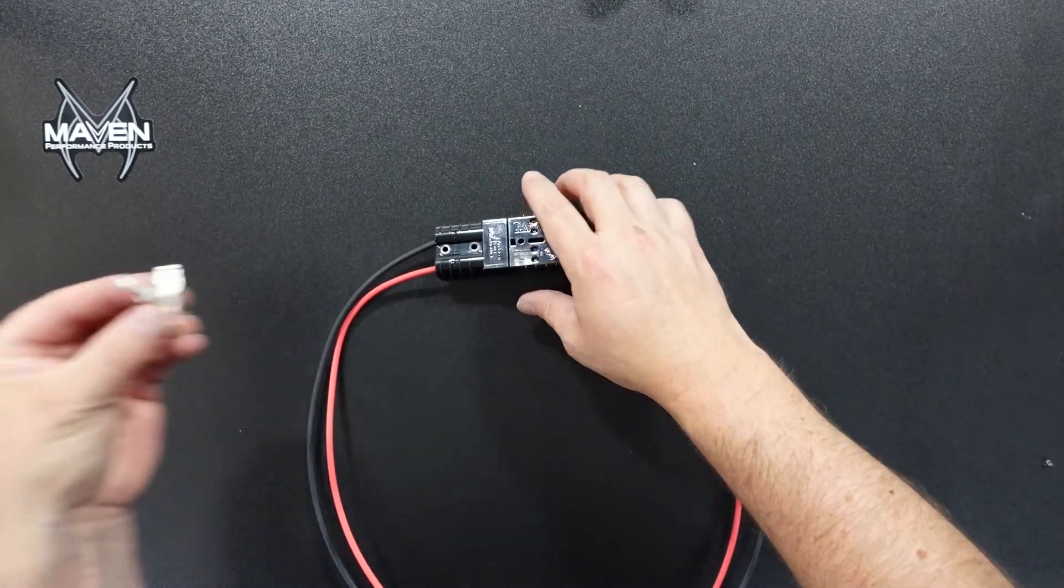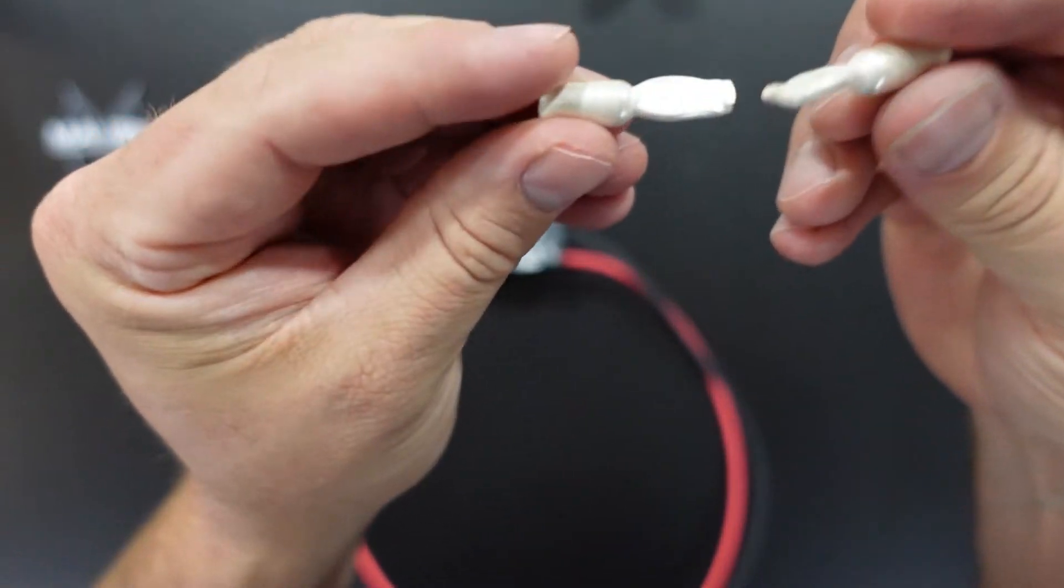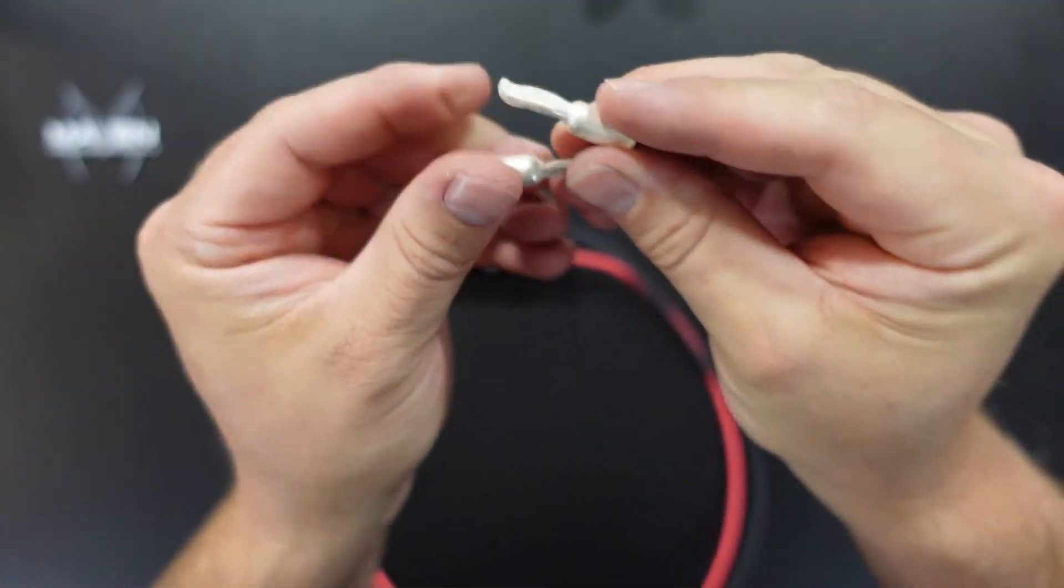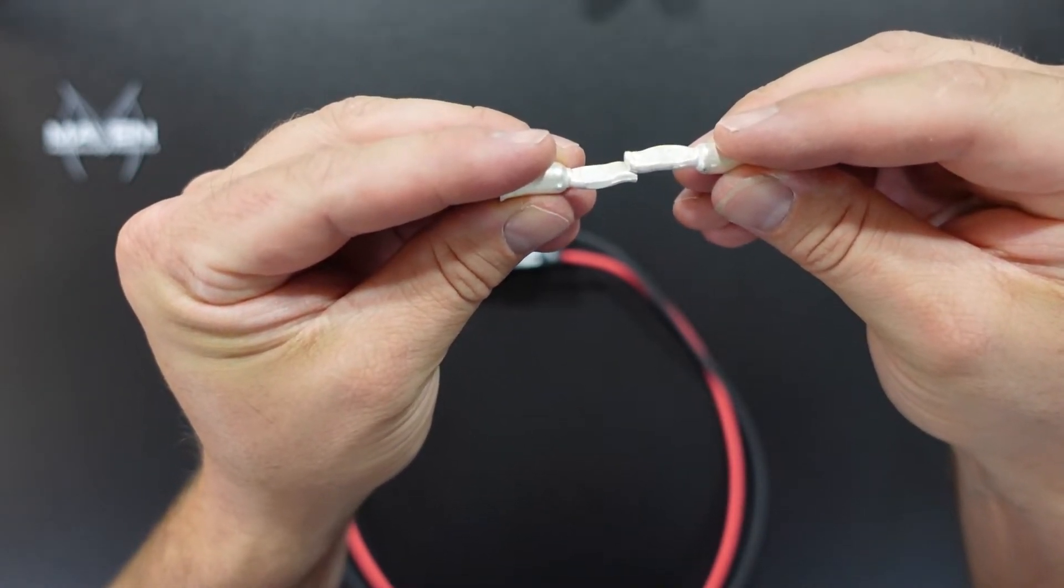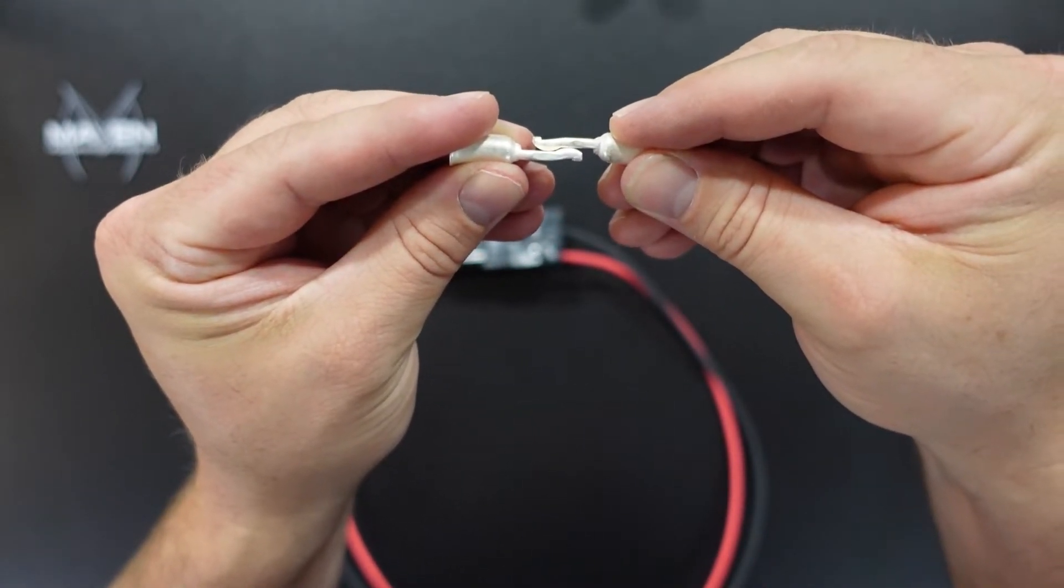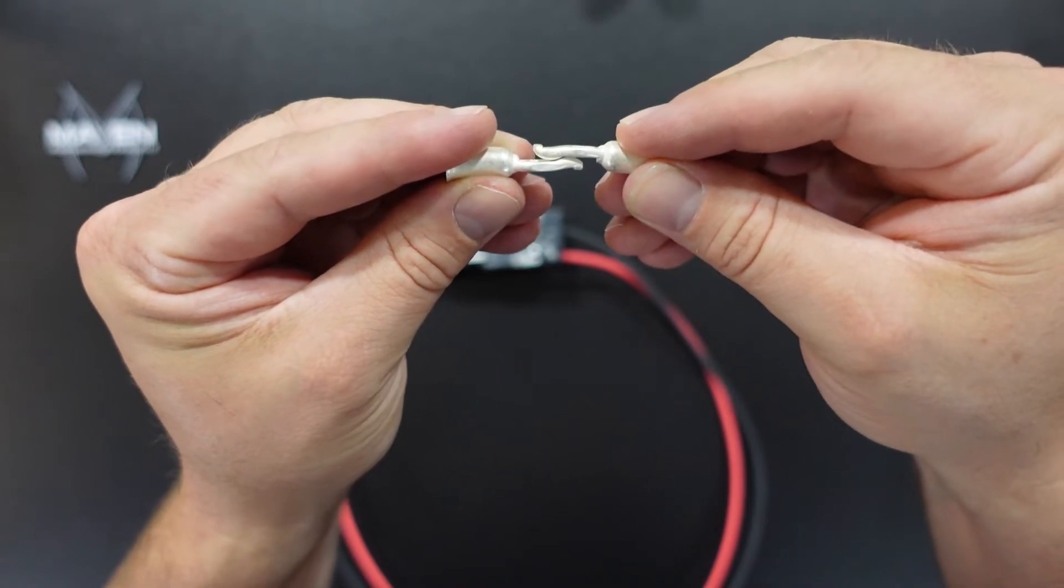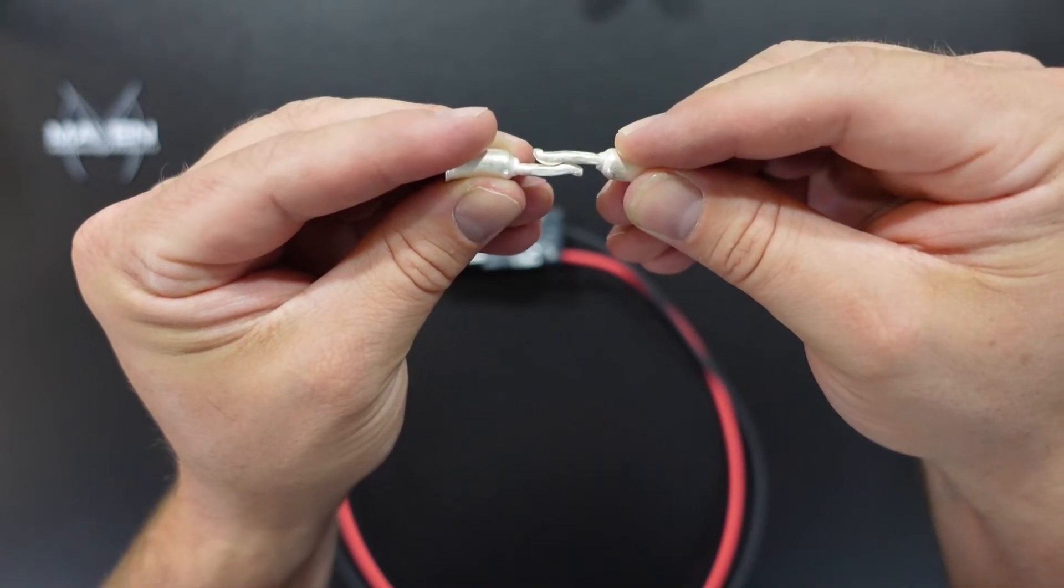Essentially, you just have two of these terminals. And when they go into the connector, they ride up over the top of each other. And they connect like that. So that's how they're connected.